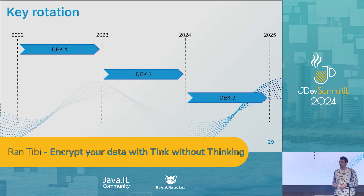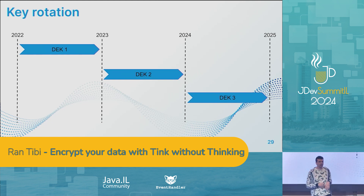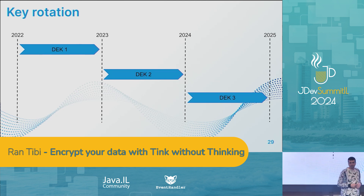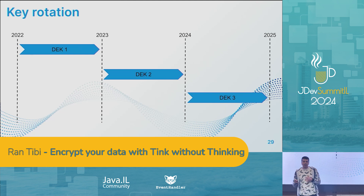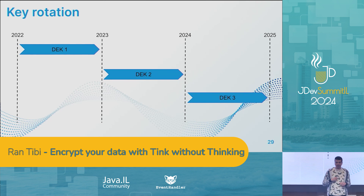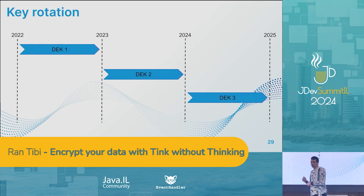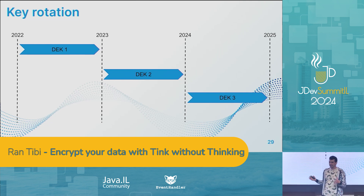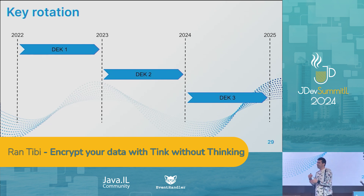So we discovered that a common practice to solve this problem is to apply key rotation. This way, we use each encryption key to encrypt just a limited period of data and rotate it at the end of each period. If we decided, for example, to rotate the key every year, then each year's data would be encrypted with a different key. So if the key for 2022 is exposed, then only its associated data might be at risk. But then, if we want to decrypt the data, we have to hold a map of all the different keys and understand which key relates to each piece of encrypted data, select the relevant key, and only then decrypt the data — a bit complex.